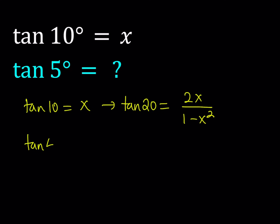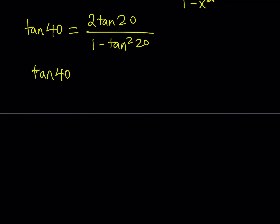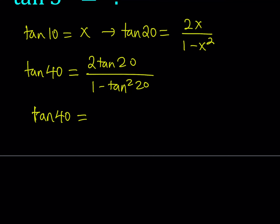I can use the double angle formula one more time and evaluate tangent 40, because 2 times 20 equals 40. That will be the same thing, but just replace the tangent alpha value with 2x over 1 minus x squared. So tangent 40 can be written as 2 tangent 20 divided by 1 minus tangent squared 20, and now we're going to replace tangent 20 with what it is. Tangent 20 is equal to 2x over 1 minus x squared.